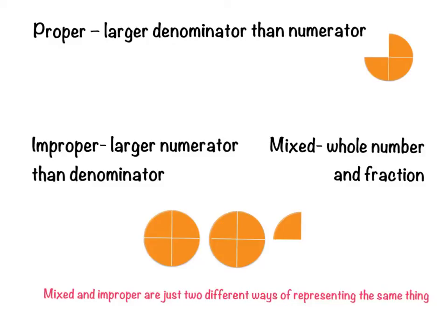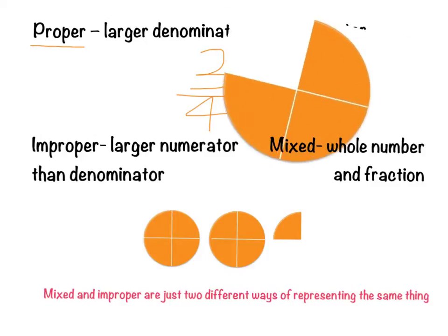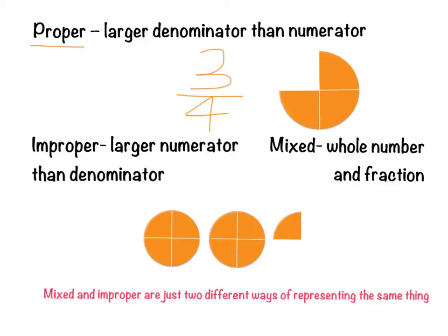Today we're going to talk about proper, improper, and mixed fractions. I've got some orange pictures here to help explain. A proper fraction has a larger denominator than numerator. For example, three-quarters: four parts make the whole, and we have three of them. So a proper fraction is one that has a larger denominator on the bottom than numerator on the top.